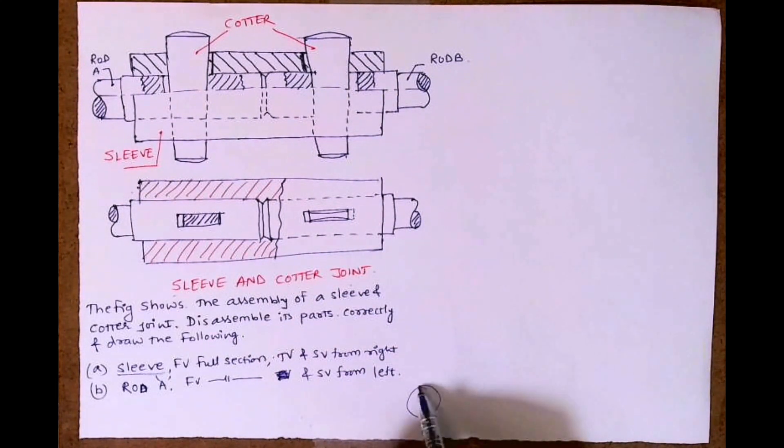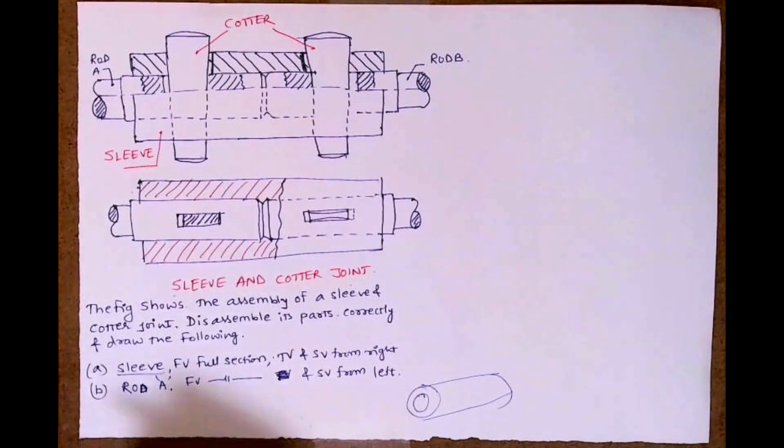This is the sleeve, and this is how it will look. Then we have rod A.